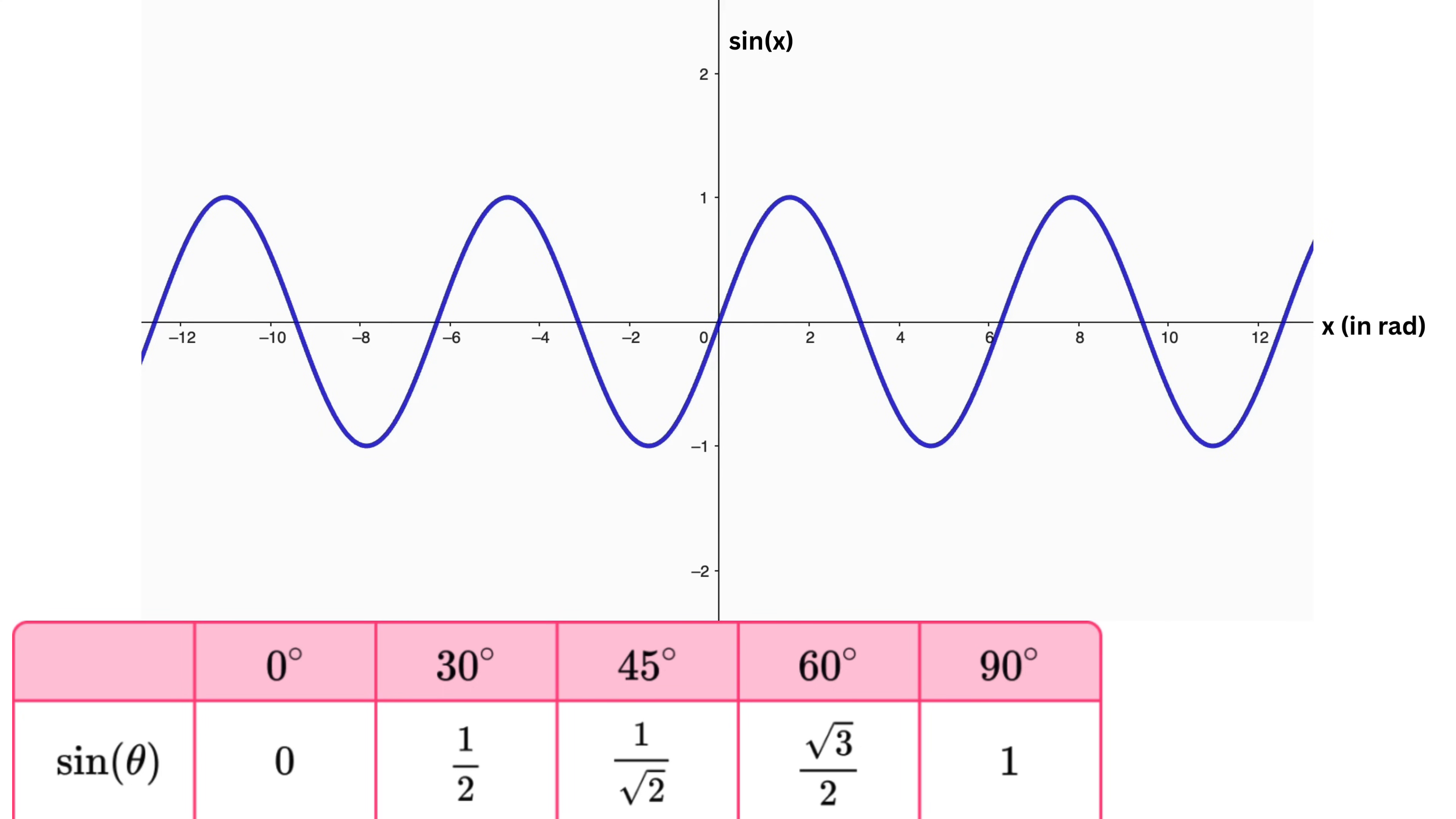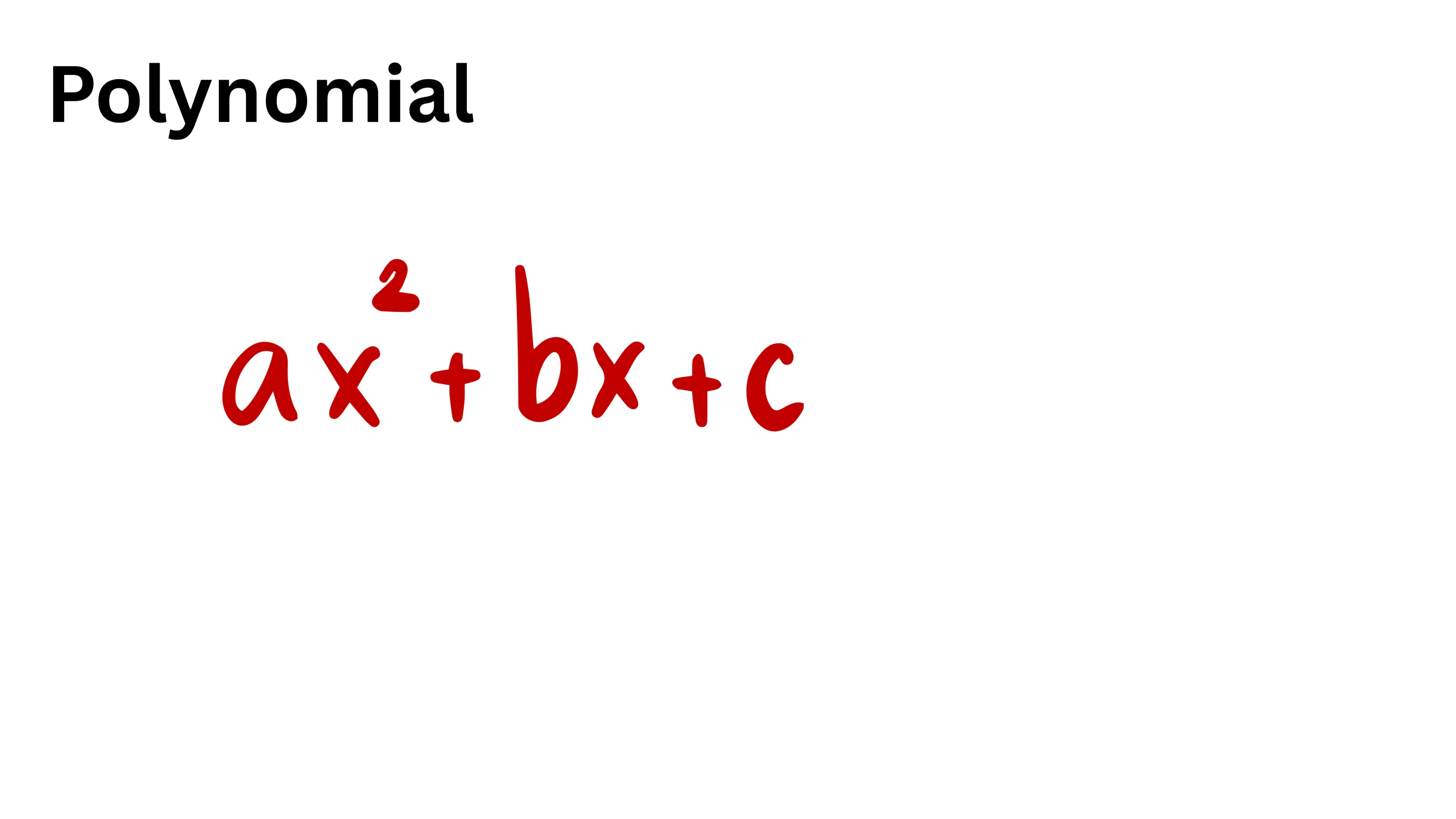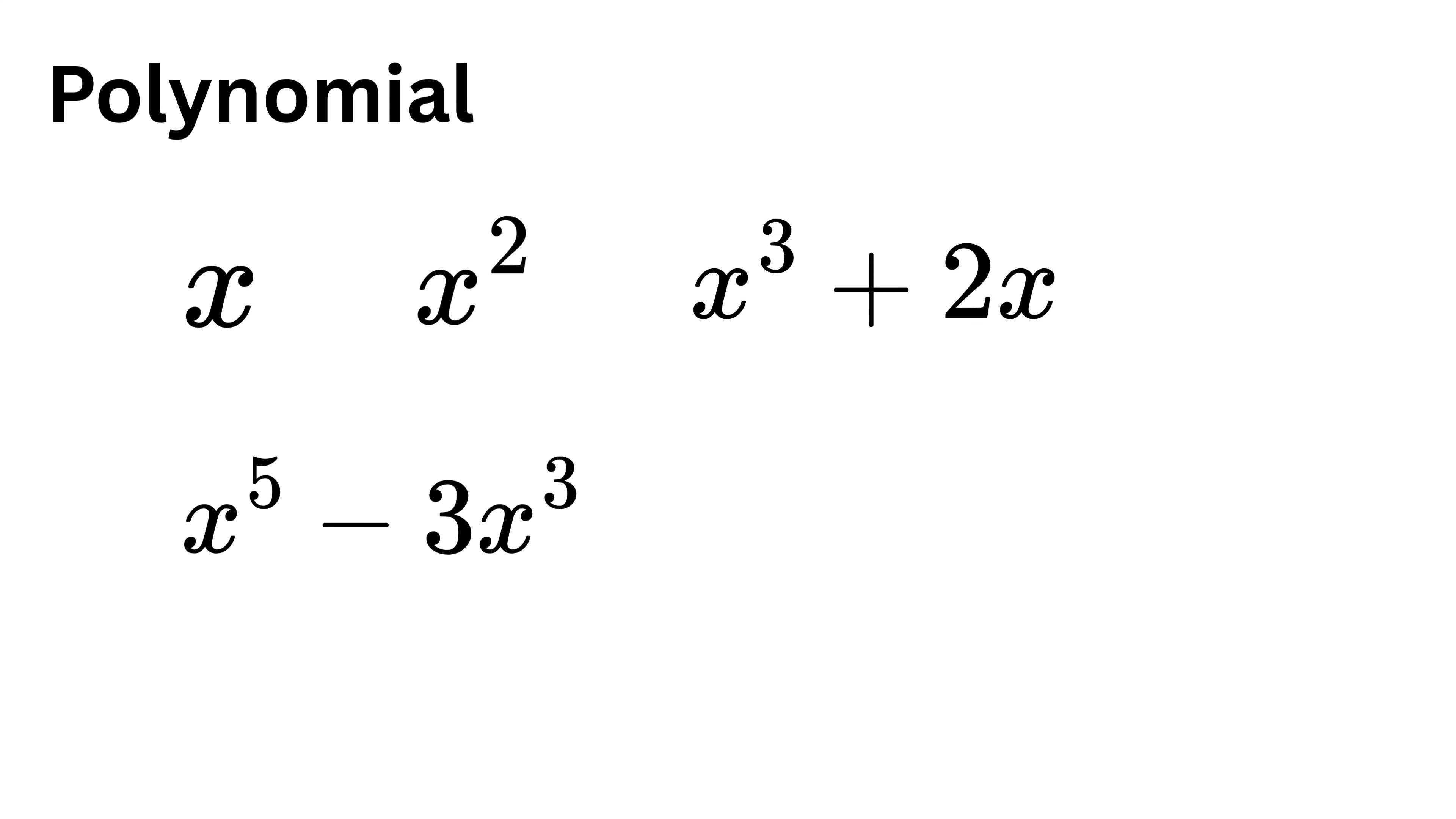Now let's talk about something very interesting: a polynomial. A polynomial is a mathematical expression made by combining powers of a variable like x with some numbers in front of it. For example, x is a polynomial, x² is also a polynomial, x³ + 2x is another one, then x⁵ - 3x³ + x² - 8 is another, and so on.